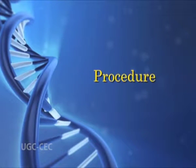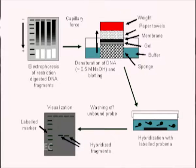The step-by-step procedure for Southern blotting begins with digesting the DNA to be analyzed with a restriction endonuclease. The digested DNA fragments are then separated by gel electrophoresis. Before transfer onto the membrane, the DNA is treated with alkali for denaturation from double-stranded to single-stranded DNA.